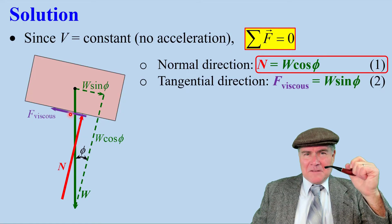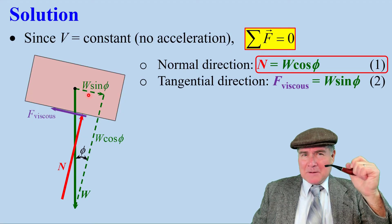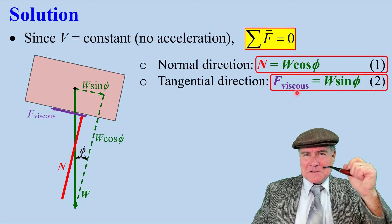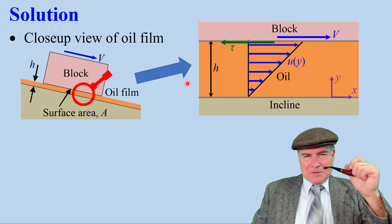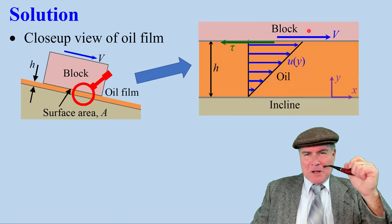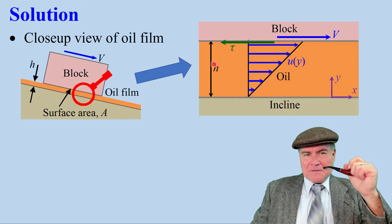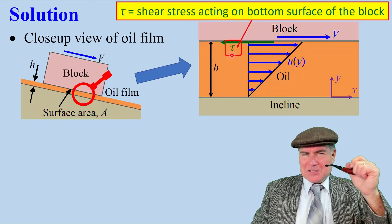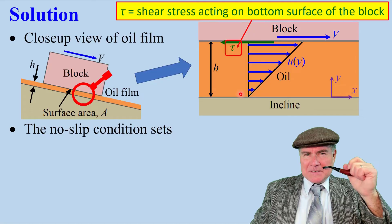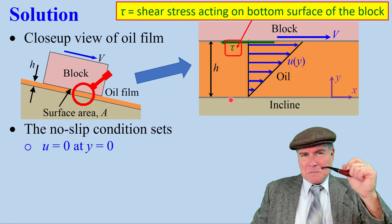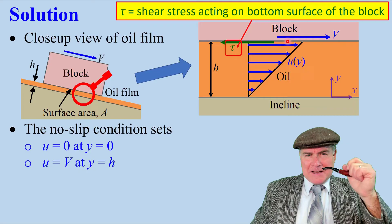Now let's take a close-up view of the oil film. Here's our magnifying glass. Tilt your head a little bit and you see this block moving at speed V. The oil thickness, H. Tau is the shear stress acting on the bottom surface of the block. The no-slip condition sets U equals zero at Y equals zero, and U equals V at Y equals H. You can prove that the velocity profile is linear.